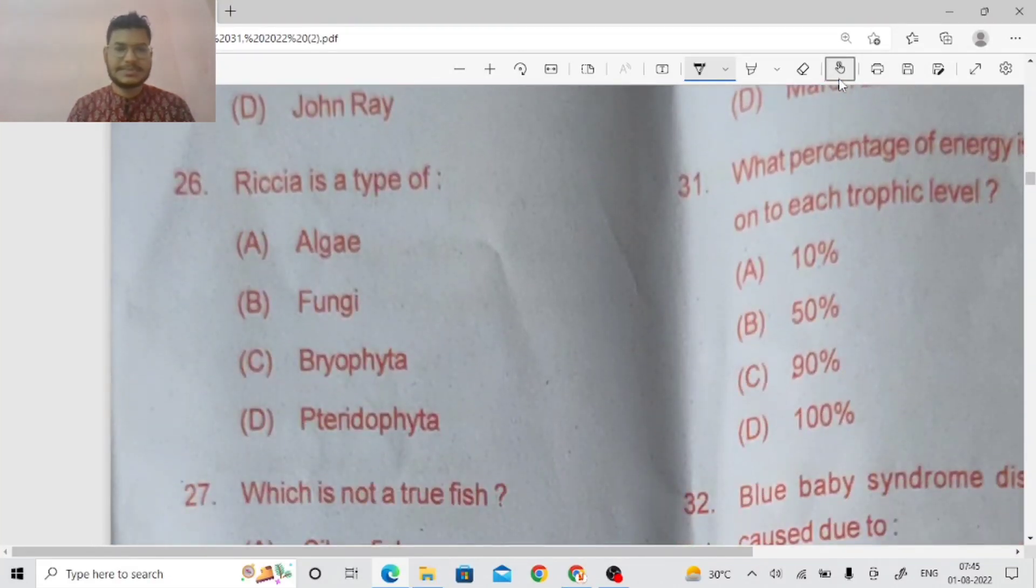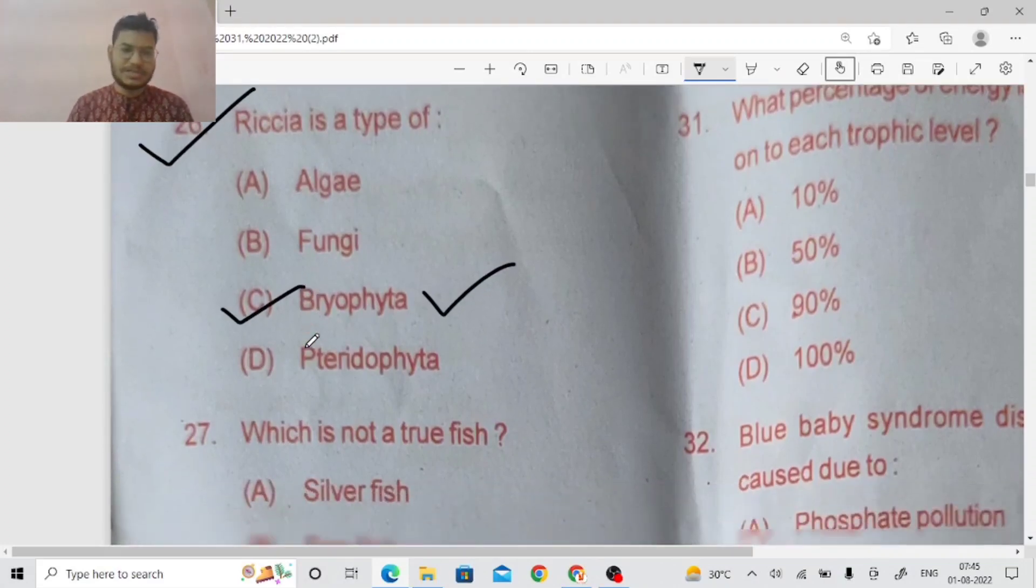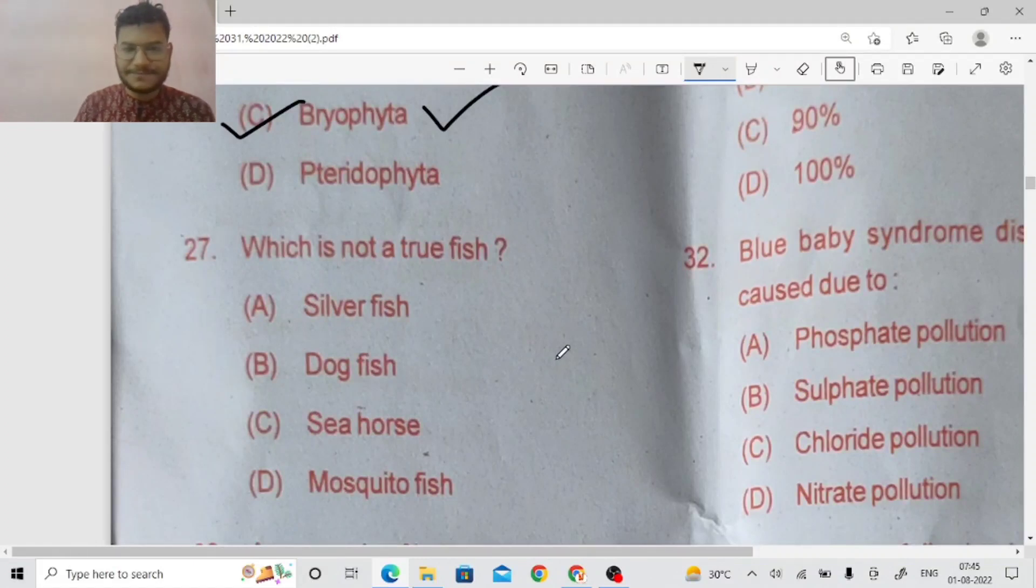Next, question number 26. Risia is a type of Briophyta, C is the right answer. Which is not a true fish? Not a true fish. Right answer is silver fish. Silver fish is an Arthropod.